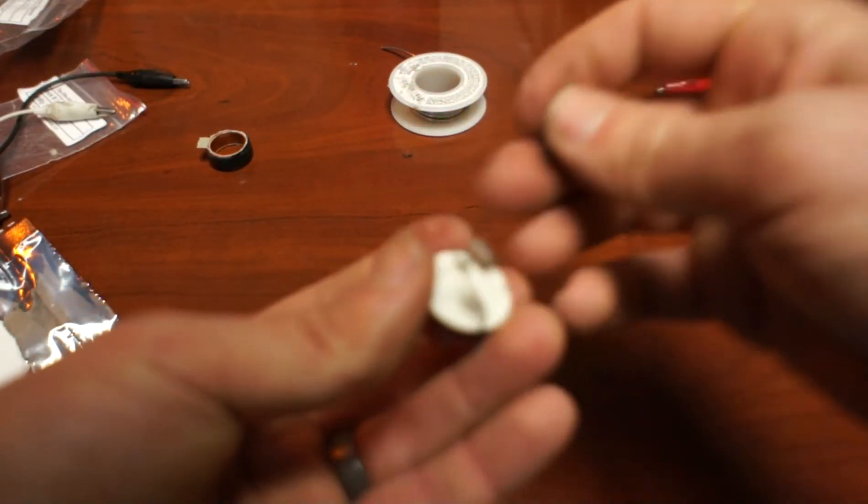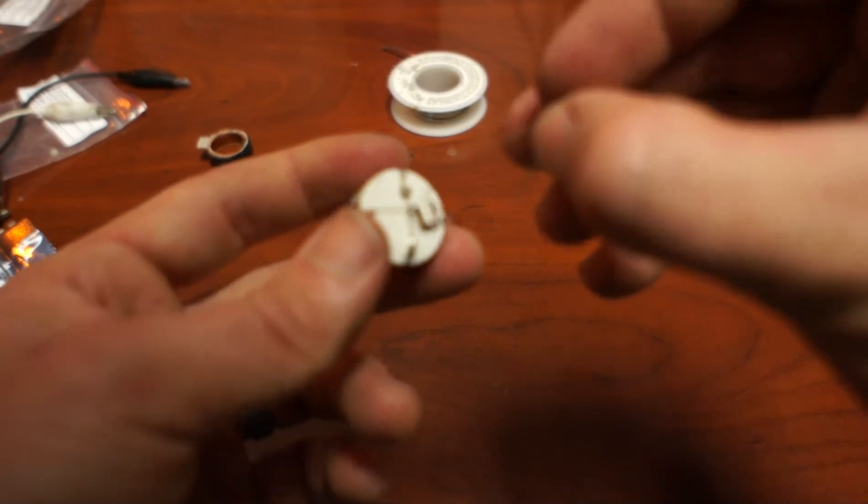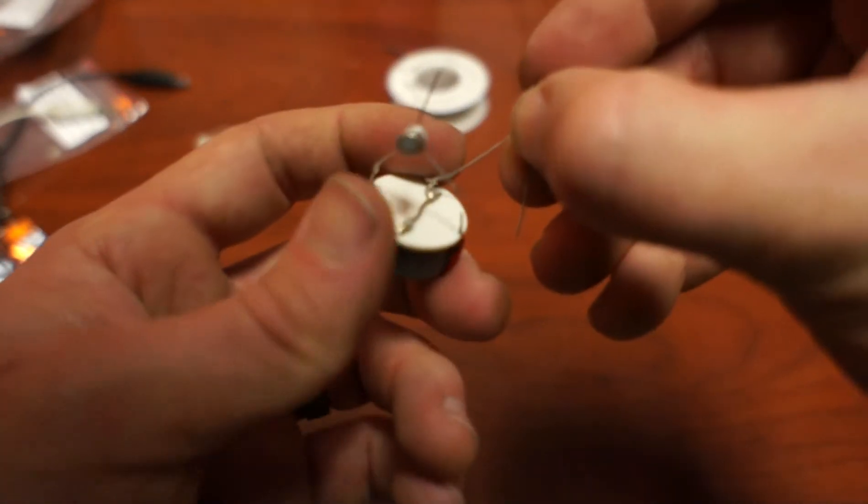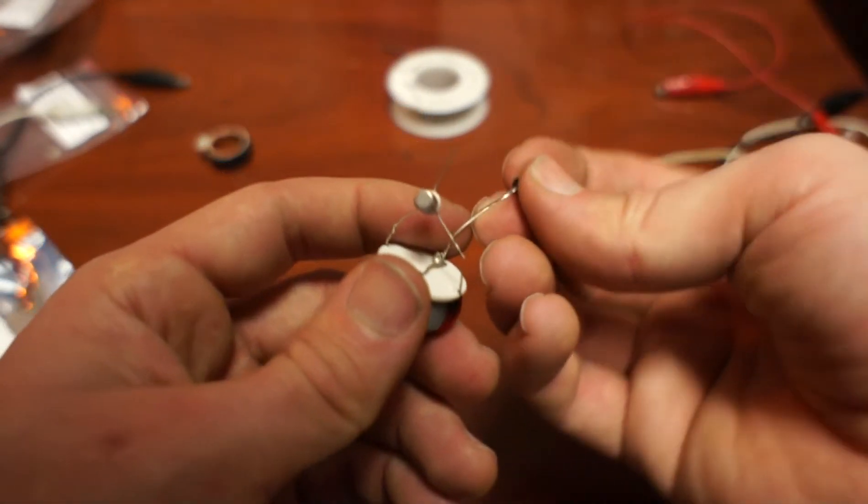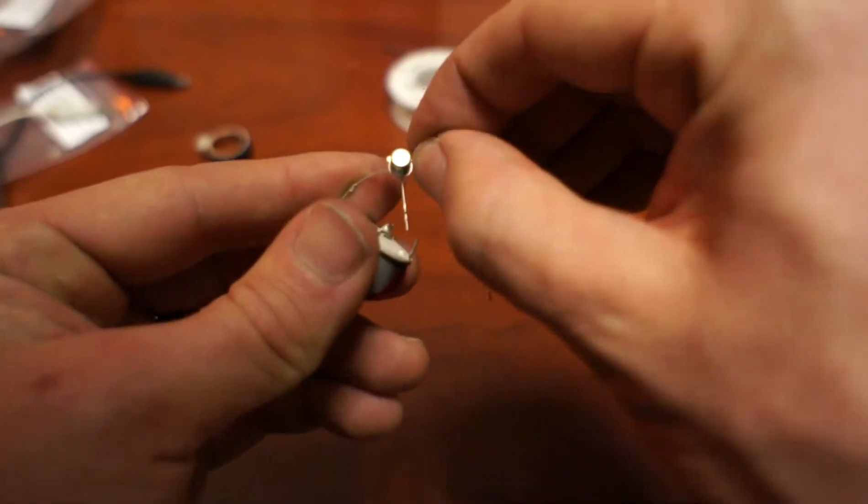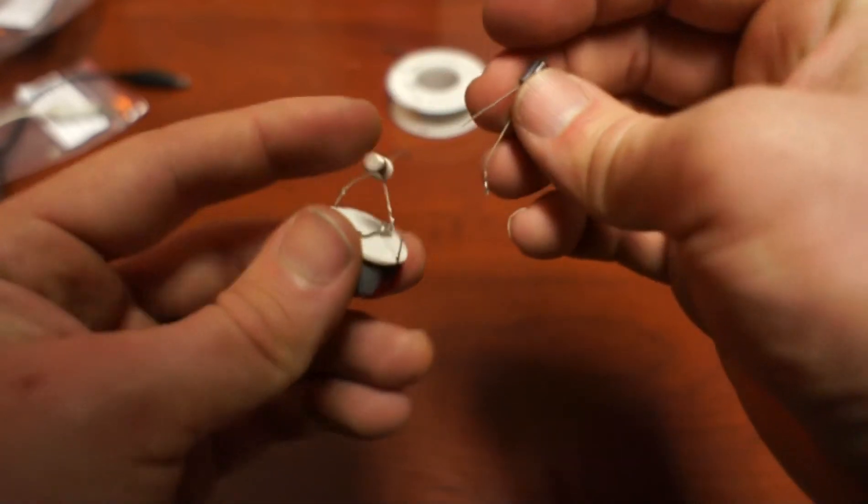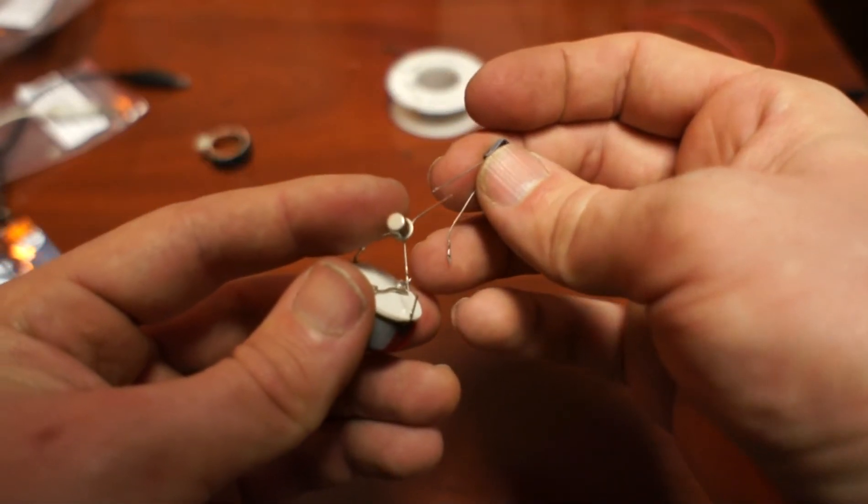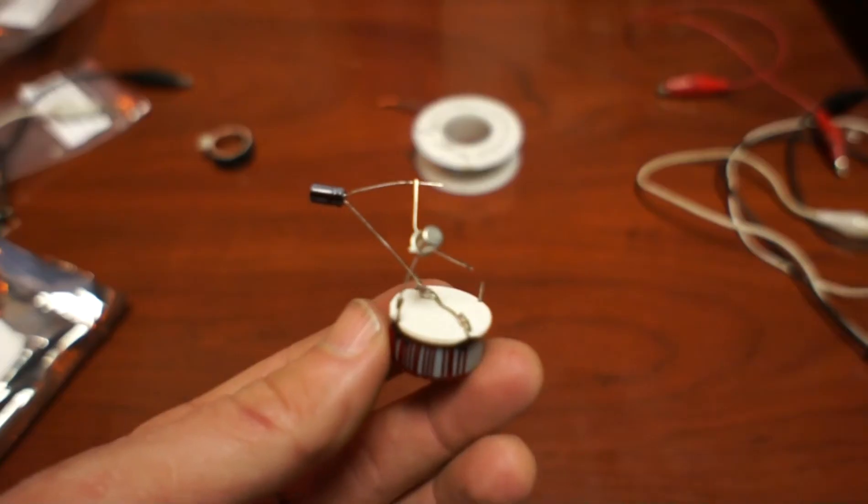We're going to solder the positive leg of this electrolytic capacitor onto here and we will solder the negative leg onto this part of the transistor right up here. Now you should have something like this.